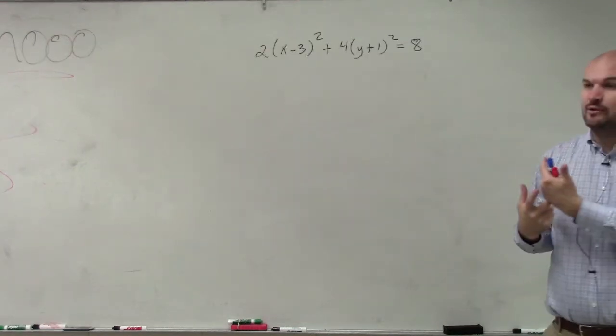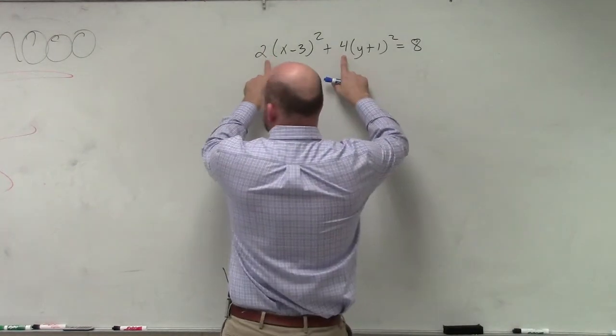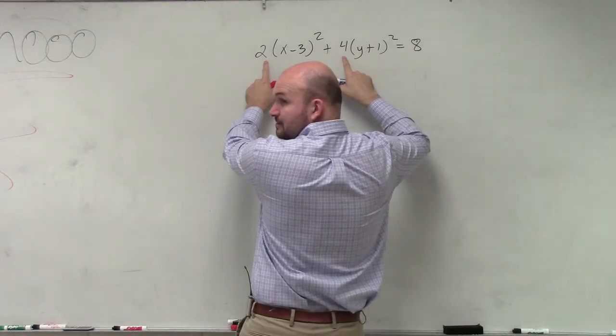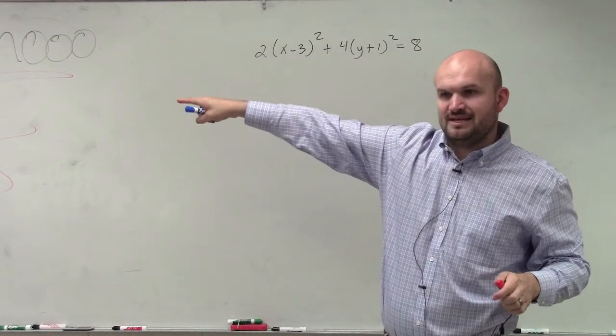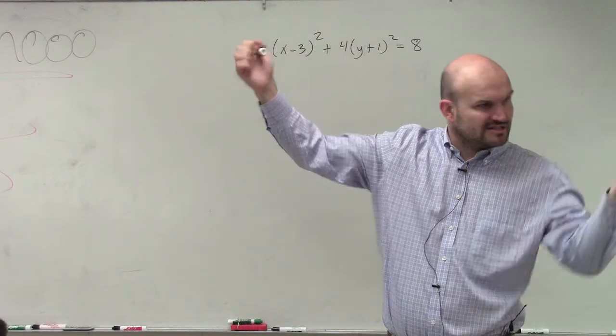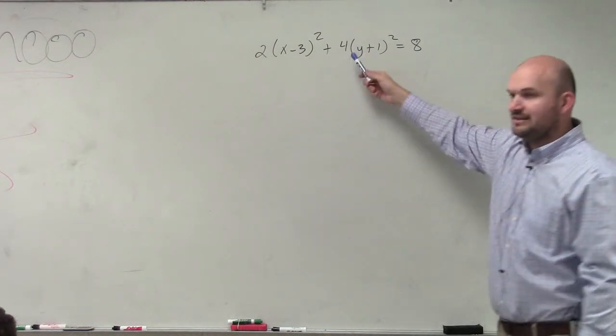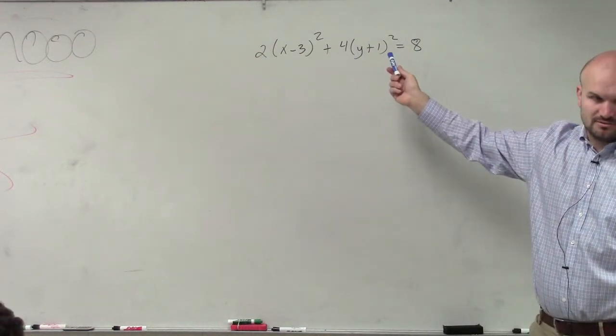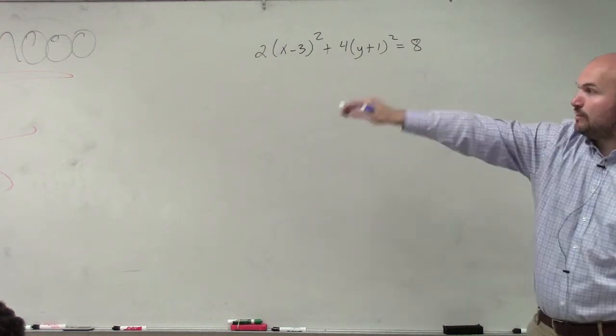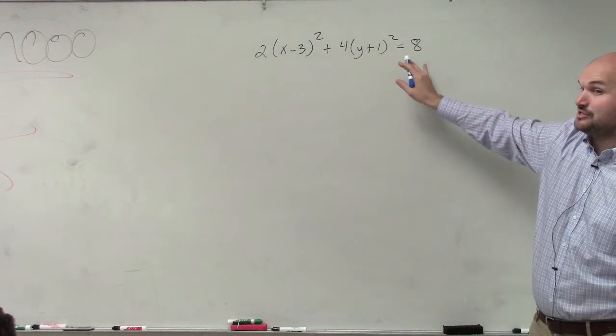But the problem was the equation of the circle didn't have any coefficients that were different, right? So if you look at the equation of the circle, there is no a and b in front of its coefficients. They're exactly the same. So that's how we can obviously tell this is not a circle. The equation of the circle is equal to r squared. This is not a circle.